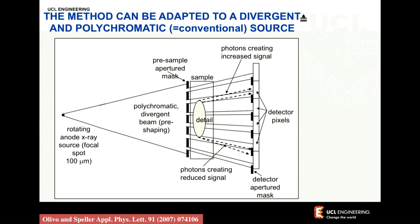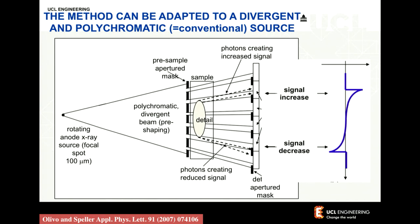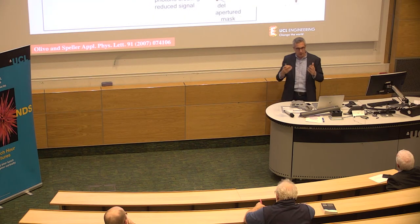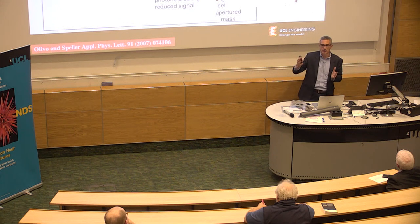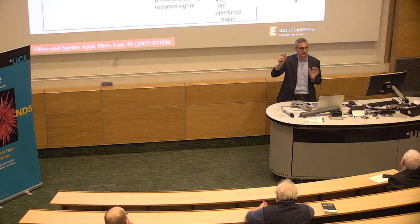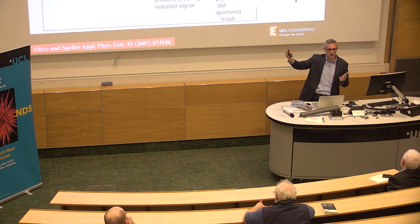When I have my object, this beamlet hits one edge, is deflected upwards because of refraction, and this pixel will instantly count more photons. The opposite occurs on the other side — beamlets deviated downwards hit the solid part of the mask, are absorbed, and I get fewer counts. So I have an increase in counts on one side and a decrease on the other. I don't need attenuation — all the x-rays can go through the sample — but I still have a significant change in counts, which means I can see the object even if it doesn't absorb at all.